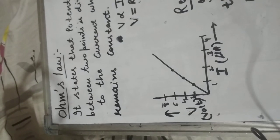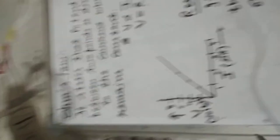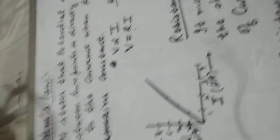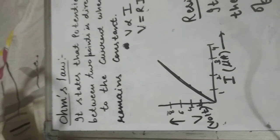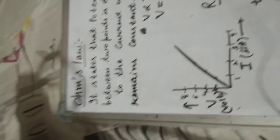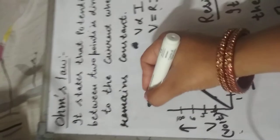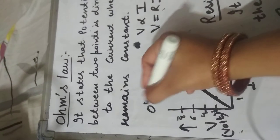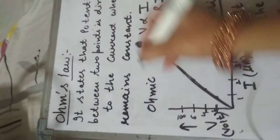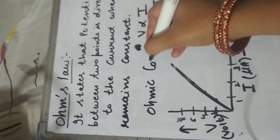It is a constant. And this slope represents the resistance. जो conductors Ohm's law को follow करते हैं, उन conductors को हम ohmic conductors कहते हैं.